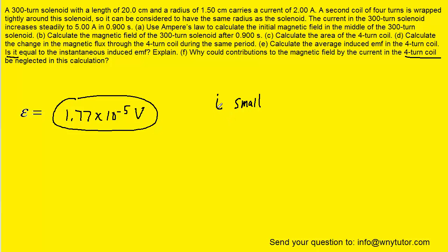So if the current in the four-turn coil is small, that will in turn mean that the magnetic field produced by that current will also be very small, at least compared to the magnetic field produced by the 300-turn solenoid. In short, because we have a small induced EMF, we would have a small current in the four-turn coil, which indeed means we have a small magnetic field being produced in that four-turn coil, and therefore that small magnetic field can be neglected.